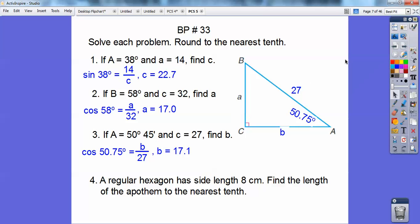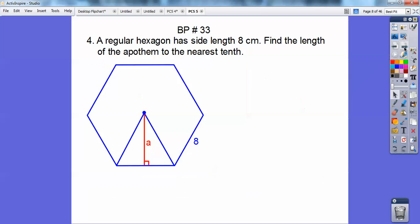Okay, number four, regular hexagon has side length 8 cm. Find the length of the apothem. Remember the apothem goes perpendicularly down. So what happens is when you divide this, not just by 8, you divide it by 16 right there, 360 divided by 16, you find out that's a 30 degree angle right there. And so I have a 30, 60, 90 triangle.